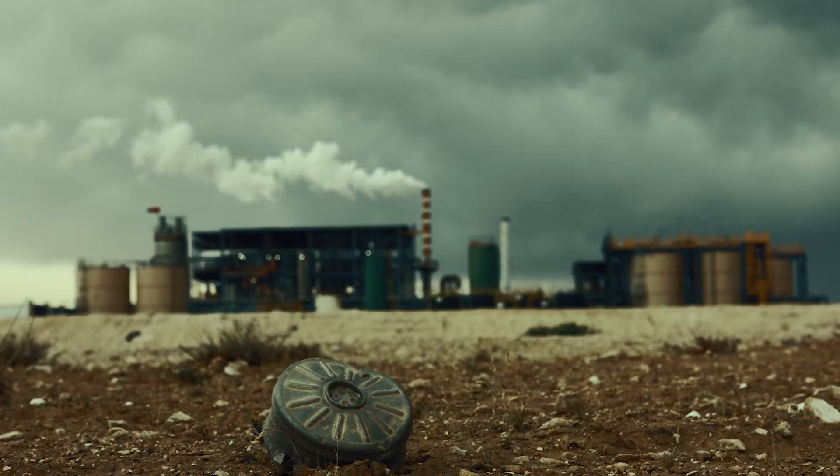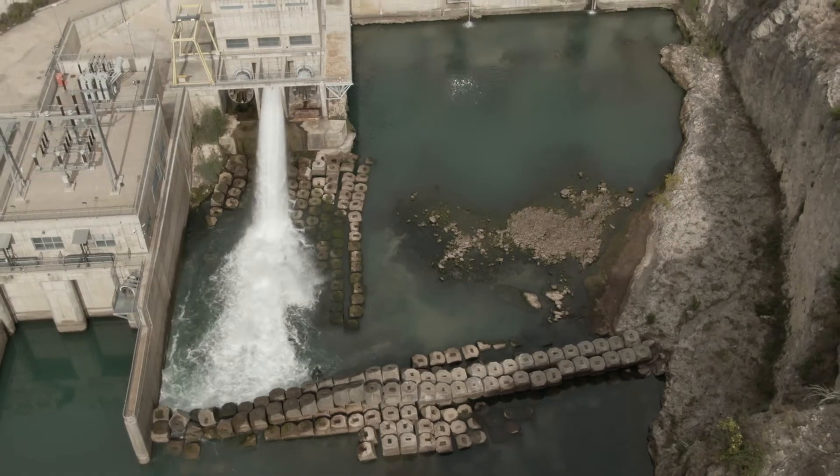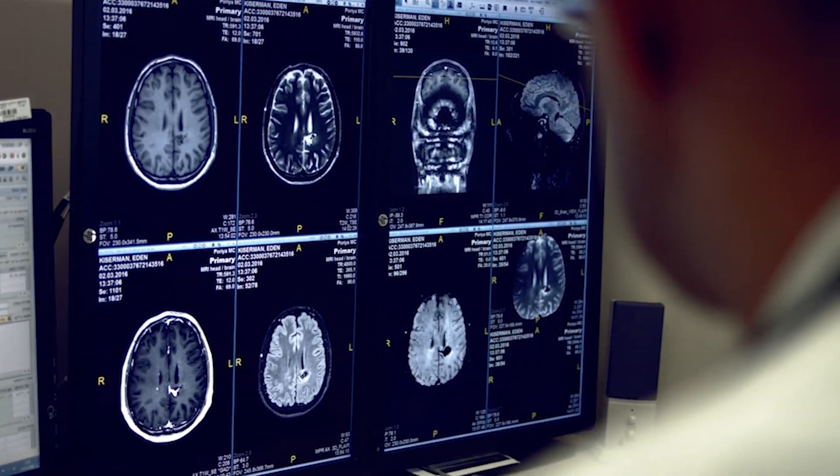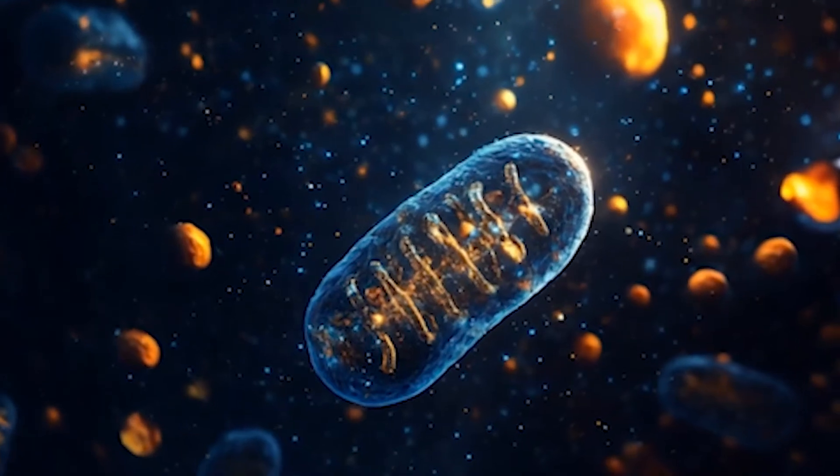Researchers found that environmental toxins, such as poisons in the air, water, or food, and certain harmful proteins in the brain, can interfere with how mitochondria work.